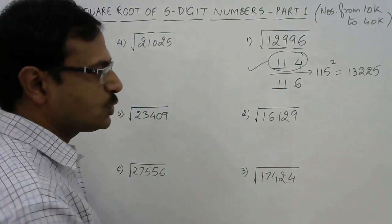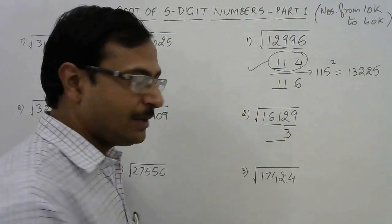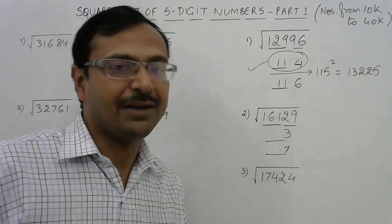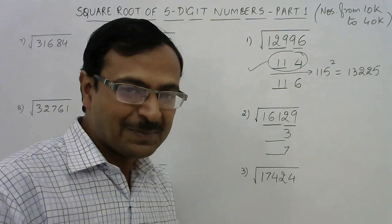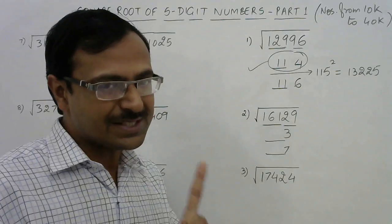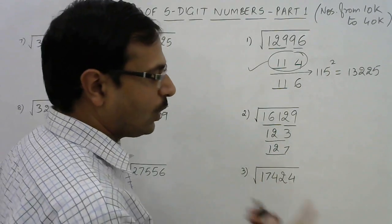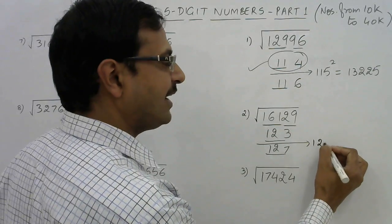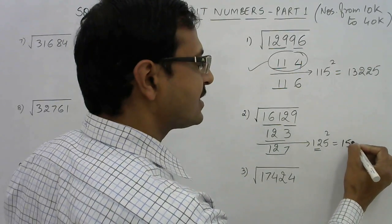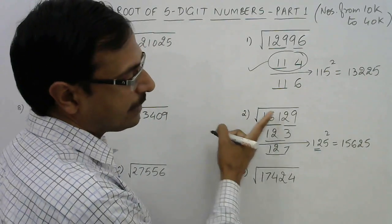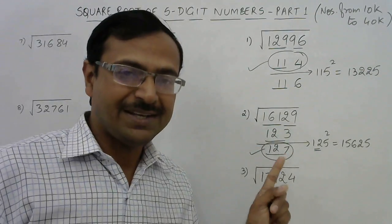Next example: 16129. Split into 161 and 29. It ends with 9, so the answer ends with either 3 (3² = 9) or 7 (7² = 49). For the triplet 161: 12² = 144 is just below 161 (since 13² = 169 is above), so 12 is the remaining part. Options are 123 or 127. Intermediate number: 125. Find 125²: 12 × 13 = 156, append 25 → 15625. Since 16129 > 15625, the answer is the larger one: 127.